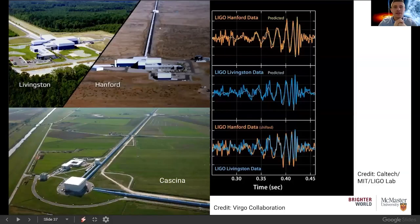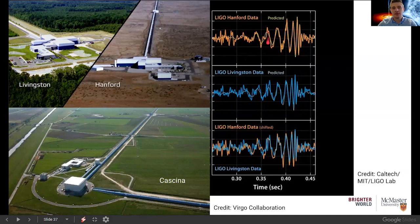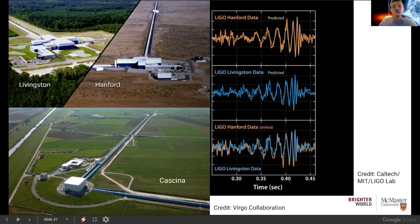By an incredible feat of science and engineering, here on Earth we're able to observe these gravitational waves using telescopes known as LIGO — a few in the United States and one called Virgo in Italy. We can predict what these waves look like when two black holes collide, and we see this wave structure with up and down motions. Livingston and Hanford independently observed two signals that, when overlaid, line up exactly — confirming we're observing gravitational waves from the collision of two black holes. Einstein's equations predicted this, but it wasn't until recently that we actually observed it.